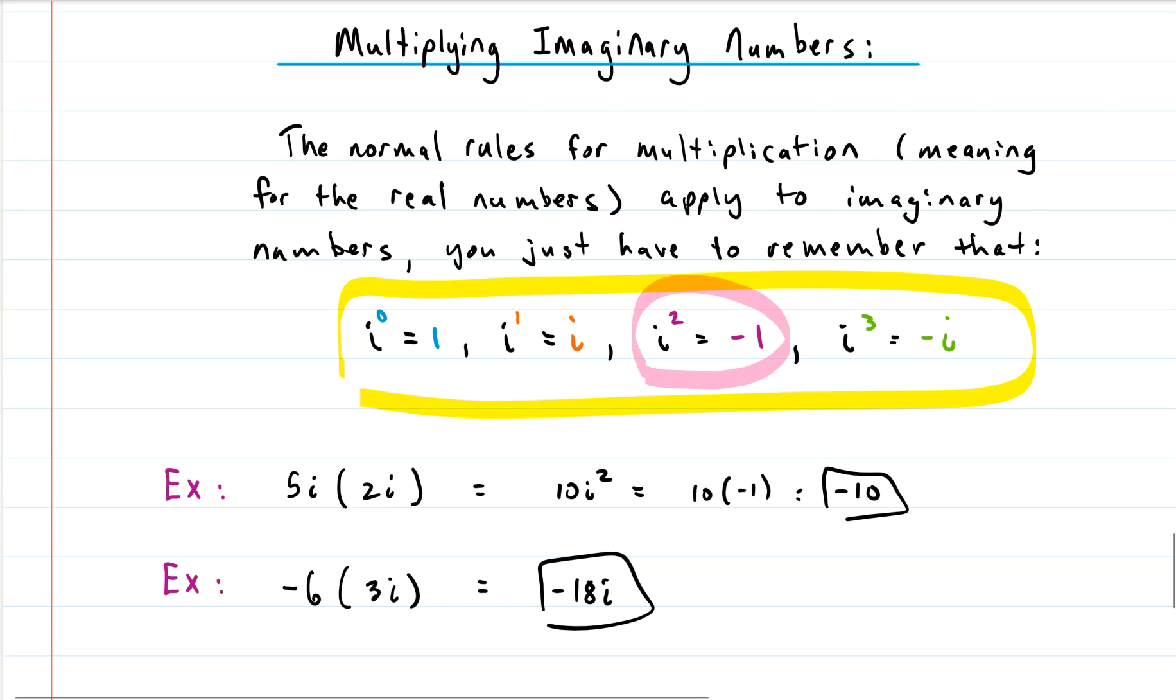So you multiply the real parts together and then you multiply the i's together, and then if the i is a number that's bigger than 2, then you would simplify it. And that's it, that's really it. Working with imaginary numbers is pretty straightforward. Hope this helps. If it did, give it a like, subscribe to the channel, and hope you have a great day.